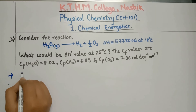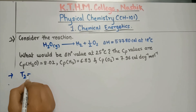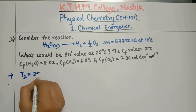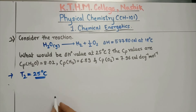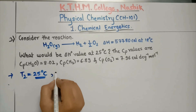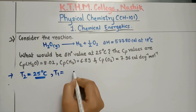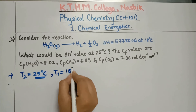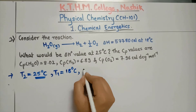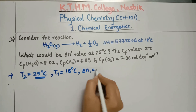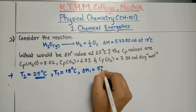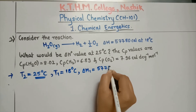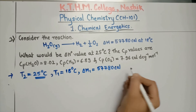Here T₂ is equal to 25°C and T₁ is equal to 18°C. Delta H₁ is equal to 57,780 calories per mole.